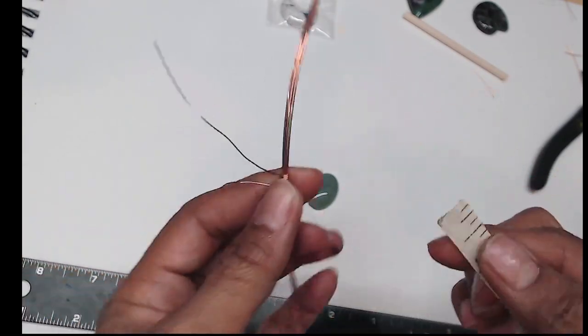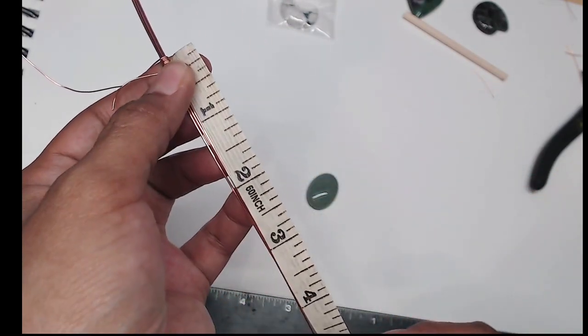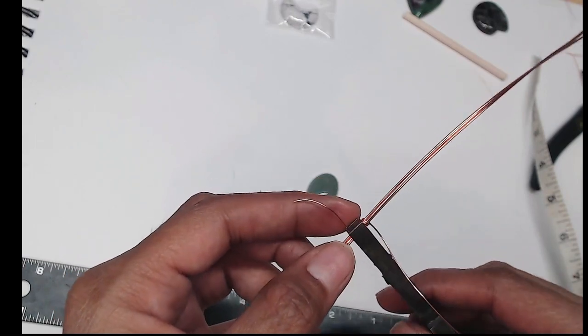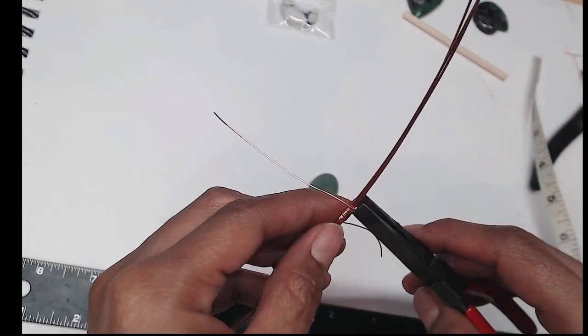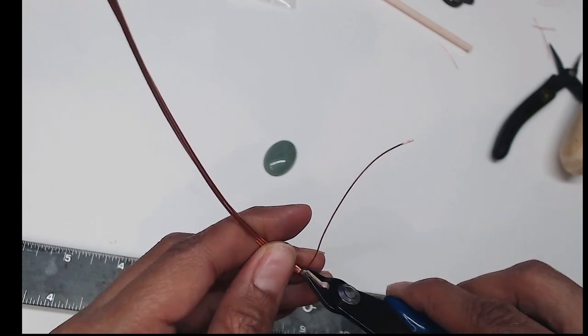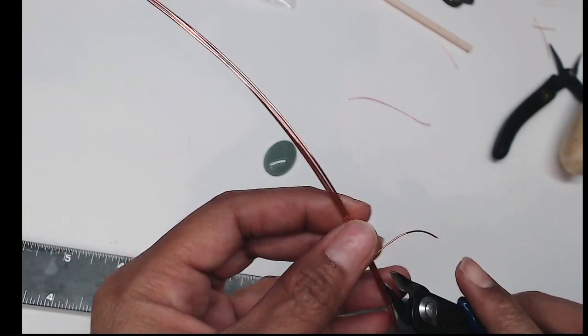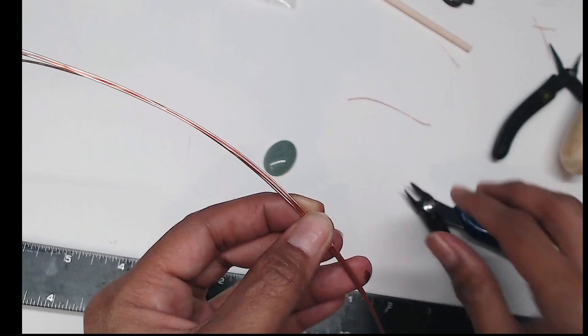And then here I'm just measuring each side to make sure they're about the same. When you're happy with the placement you can go ahead and clamp it down a little bit. After that, use your flush cutter to snip off the tails and make sure you snip them off on the same side.